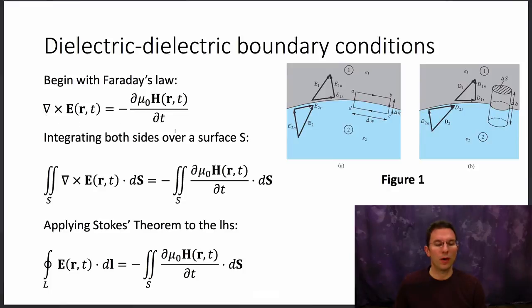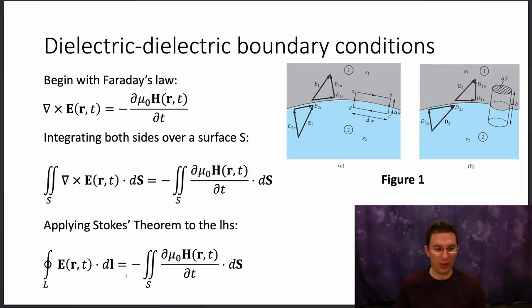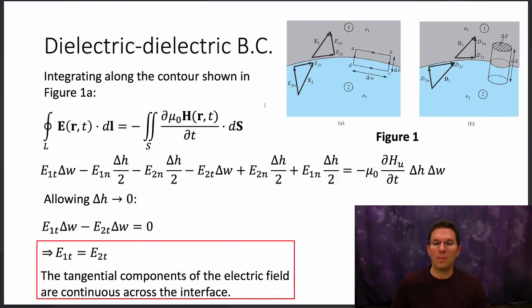This is Faraday's Law in differential form and I'm going to integrate both sides of this equation over a surface S. I can apply Stokes' theorem to the left-hand side of this equation. Stokes' theorem says that the integral over a surface area of the curl of a vector field is equal to that vector field integrated along the line bounding that surface area. So let's integrate this equation along the contour shown in Figure 1a.